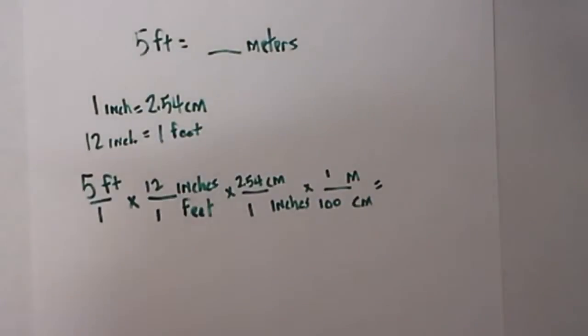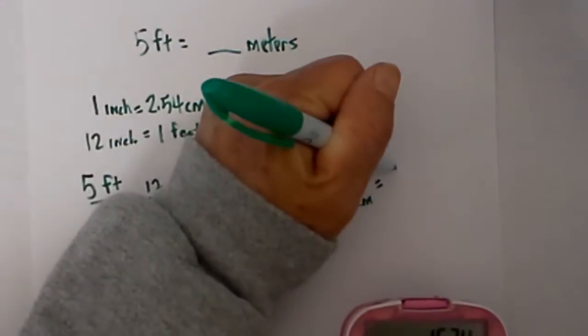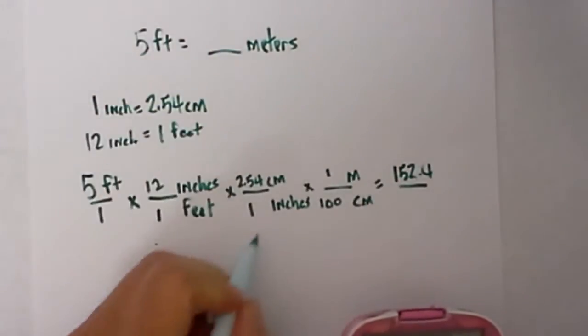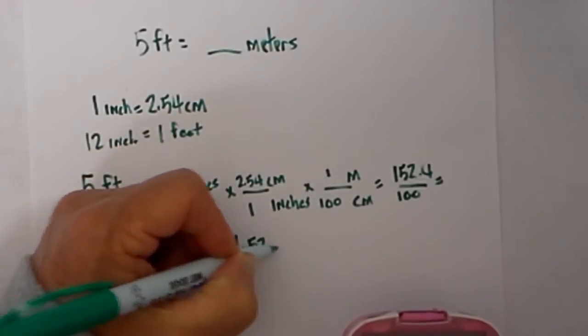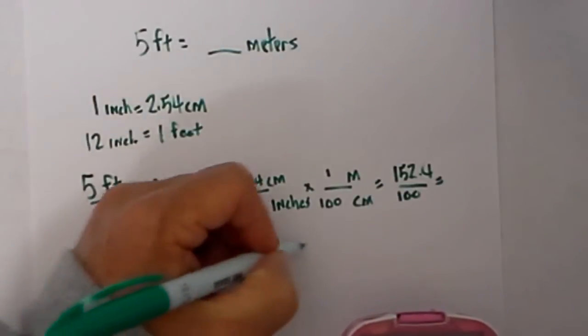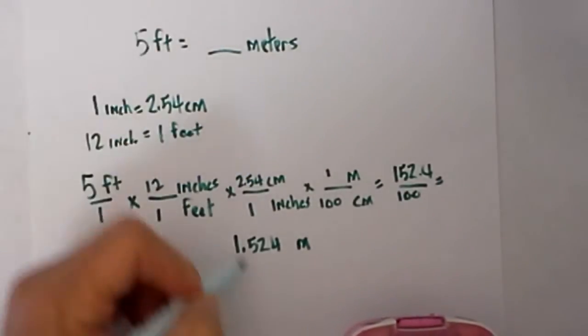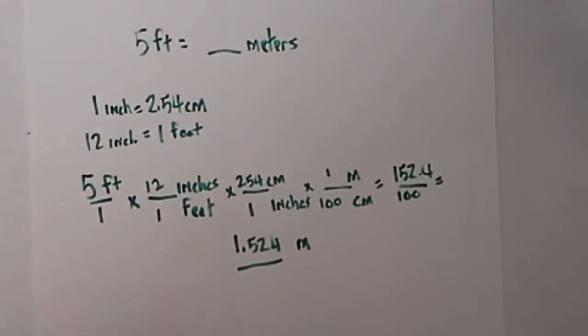I then multiply straight across because I am now at meters. So I take 5 x 12 x 2.54 and that equals 152.4 but I need to divide that by the bottom which is 1 x 100 and that equals 1.524. So 5 feet is equal to 1.524 meters.